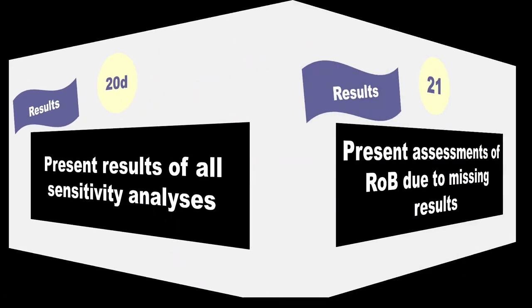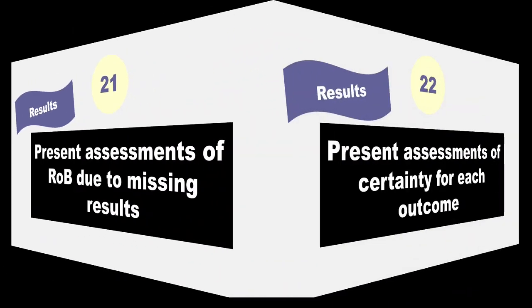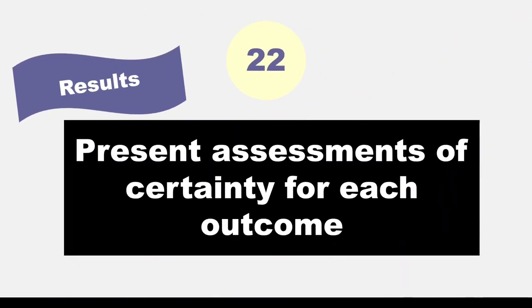Item 21, present assessments of risk of bias due to missing results arising from reporting biases for each synthesis assessed. In item 22, authors are asked to present assessments of certainty or confidence in the body of evidence for each outcome assessed.